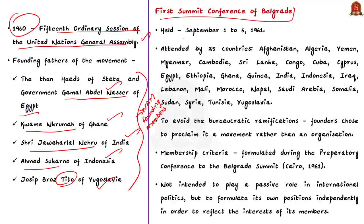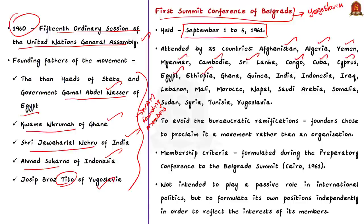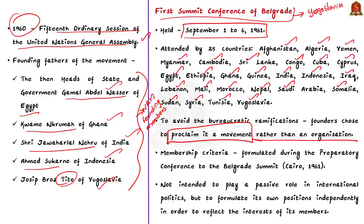This conference was held in September 1961. Belgrade is the capital of the erstwhile Yugoslavia. The conference was attended by 25 countries including Afghanistan, Algeria, Yemen, Myanmar, Cambodia, Sri Lanka, Congo, Cuba, Cyprus, Egypt, Ethiopia, Ghana, Guinea, India, Indonesia, Iraq, Lebanon, Mali, Morocco, Nepal, Saudi Arabia, Somalia, Sudan, Syria, Tunisia and Yugoslavia. To avoid bureaucratic ramification, the founders of NAM chose to proclaim it as a movement rather than an organization. This movement was not intended to play a passive role in international politics but rather to formulate its own position independently in order to reflect the interest of its members.